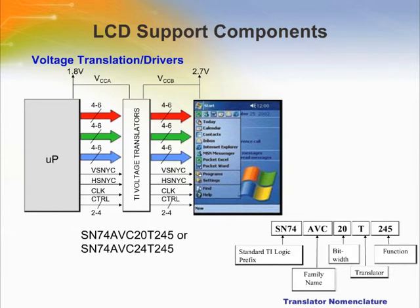A typical application for voltage translation is shown on the slide. The LCD controller has 1.8 volt IOs whereas the LCD is operating with a higher IO voltage of 2.7 volts. A 16, 20, or 24 bit wide level translator is used in this application to level shift the signals from the LCD controller to the LCD panel itself.